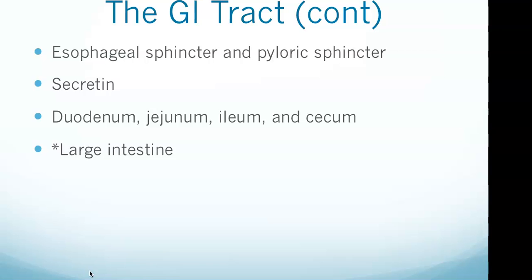Continuing with the GI tract: the esophageal sphincter separates the esophagus from the stomach. The pyloric sphincter is located between the stomach and the duodenum, the first part of the small intestine. The pH of the stomach is maintained between one and two by the release of gastric juice, which contains hydrochloric acid as well as enzymes that begin the chemical digestion of protein. The contents of the stomach — called chyme — exit the stomach and enter the small intestine where digestion is completed and absorption begins. The three sections of the small intestine are the duodenum, the jejunum, and the ileum. The stimulus for release of secretin is chyme in the duodenum, and secretin stimulates the pancreas to release bicarbonate.